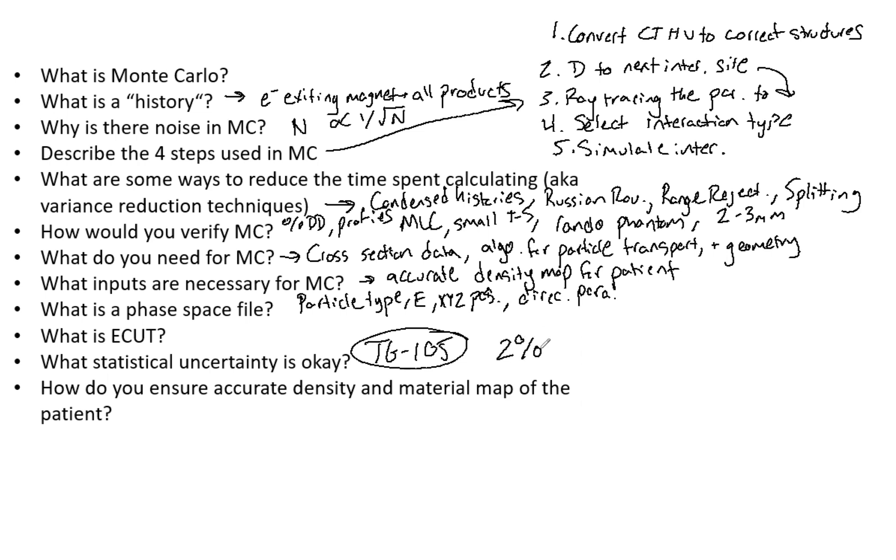How do you ensure the accurate density and material map of the patient? As I mentioned, one of those things was a density map for the patient. So what do we need to get this? First thing, we get this from CT. The first step: you want to convert HU to density.